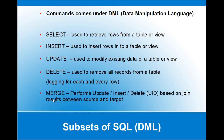The next DML command is MERGE. MERGE performs UPDATE, INSERT, and DELETE operations based on a join between a source and target table. If there is a match on the business key or primary key it will update. If there is no match on the primary key it will insert that row into the target. If the primary key is not matching with the source, it will delete the entry in the target. That's how the MERGE command works.